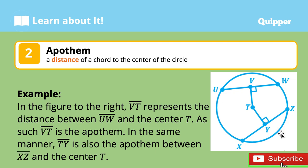Second is the apothem. The apothem is the distance of a chord to the center of the circle. For example, in the figure here, line segment VT represents the distance between the line segment UW, or the chord, to the center T. That's the distance — line segment VT — and that's the apothem.